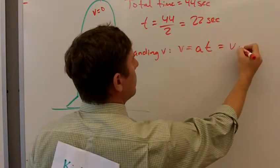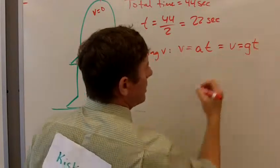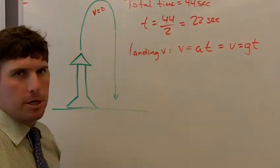So we know what the specific acceleration is. V equals GT. G is the acceleration due to gravity.